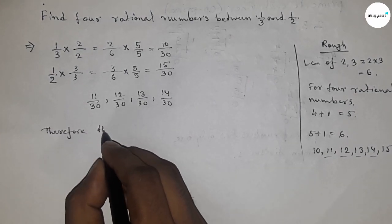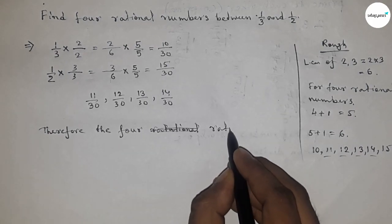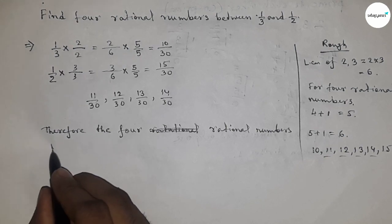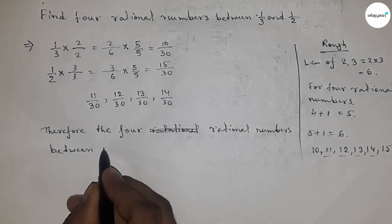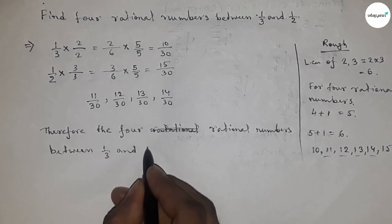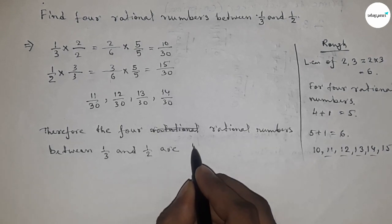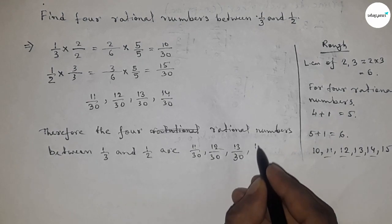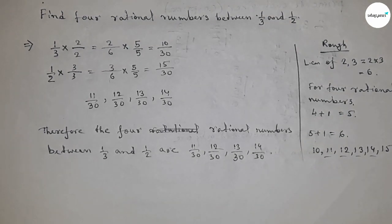The four rational numbers between 1/3 and 1/2 are 11/30, 12/30, 13/30, and 14/30. That's the process. Thanks for watching, please subscribe, like, and comment.